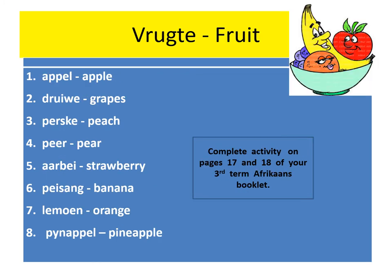Fruchter — Fruit. Apple: Apple. Drava: Grapes. Perska: Peach.